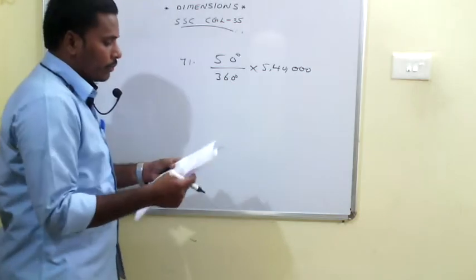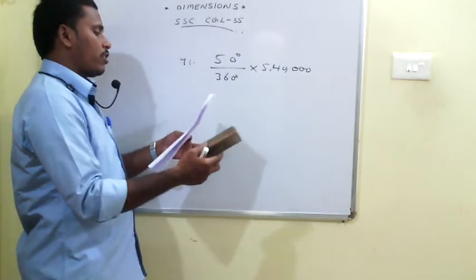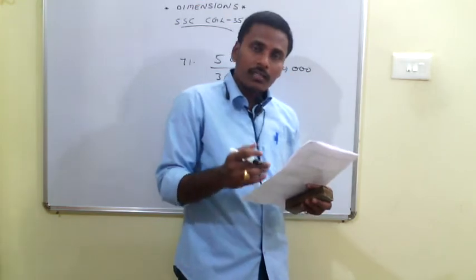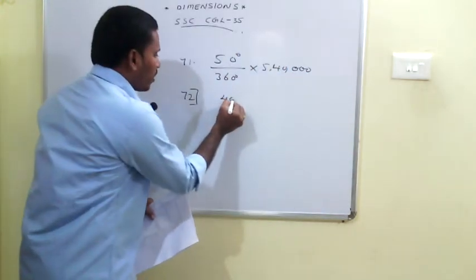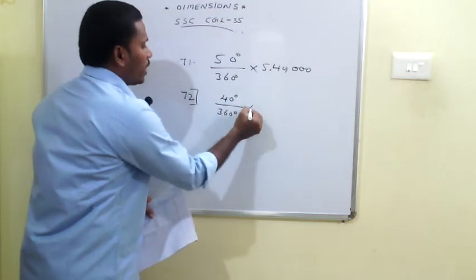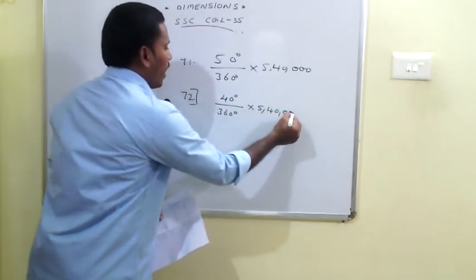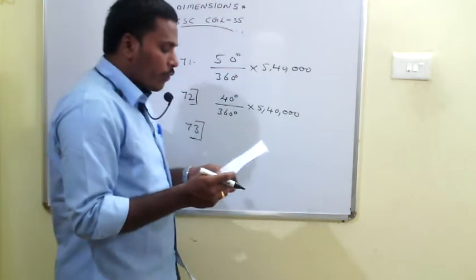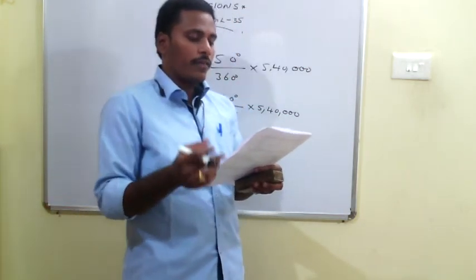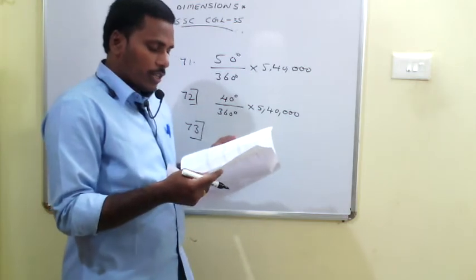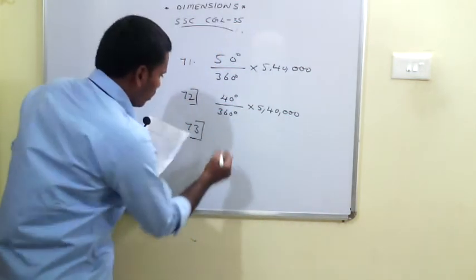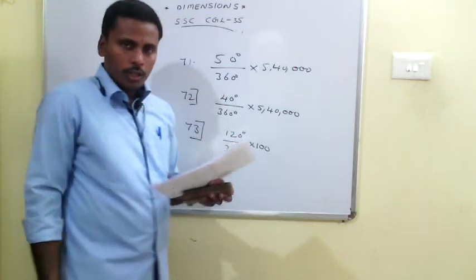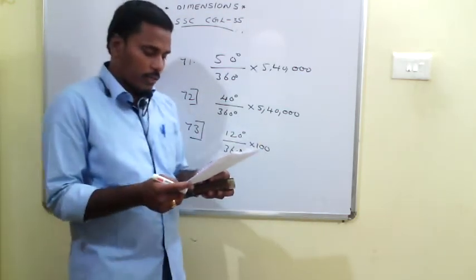The 72nd problem: the expenditure on bricks is less than timber by how much? Bricks = 50°, timber = 90°, difference = 40°. Calculate (40/360) × 5,40,000 to get the answer. The 73rd problem: percentage of total expenditure on steel and cement. Steel = 45°, cement = 75°, total = 120°. So (120/360) × 100 = 33⅓ percent.